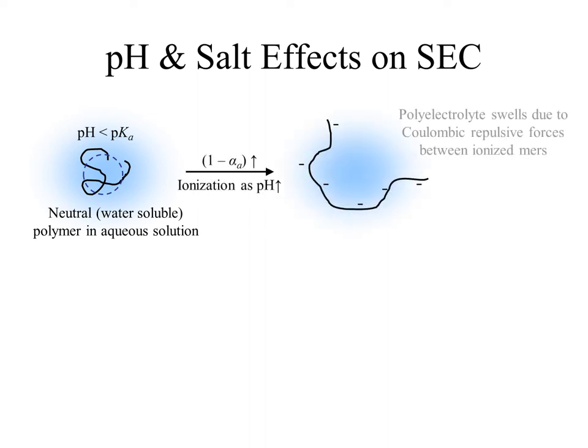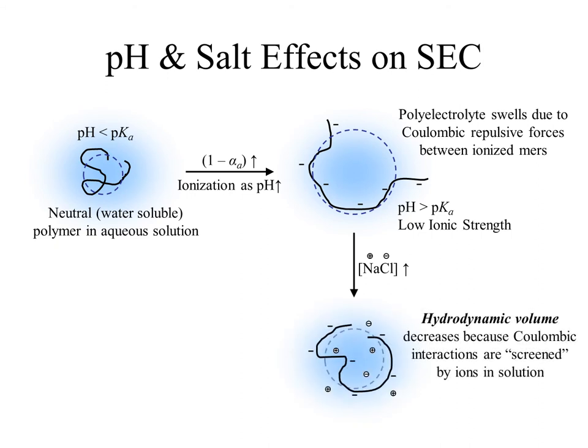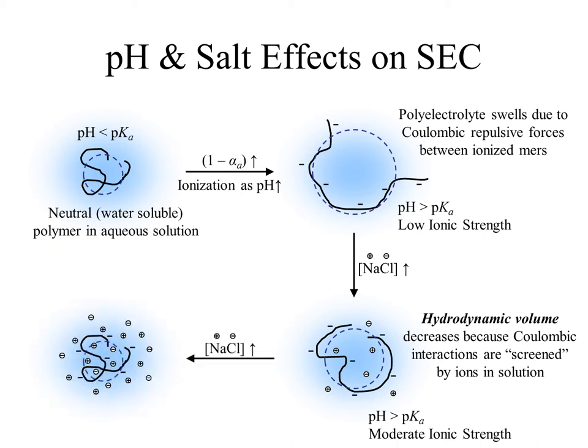As the pH of the surrounding solution, the eluent in this case, is raised, any weak acid functional groups on the mers become deprotonated and therefore ionized. This causes swelling of the random coil, and thus an increase in the hydrodynamic volume of the polymer molecules as they are forced through the column. Adding sodium chloride, or any other salt for that matter, helps to screen out those electrostatic interactions between the mers on the polymer chain. As you can imagine, this decreases the amount of swelling that the coil undergoes and the hydrodynamic volume begins to decrease. Eventually, as the ionic strength of the eluent becomes high enough, the hydrodynamic volume shrinks back down as the Coulombic interactions are all but completely screened out.